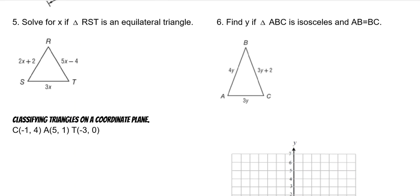Solve for x if triangle RST is an equilateral triangle. So if it's equilateral, all the sides are equal to each other. You just choose two to set equal to each other. It doesn't matter which two you choose because they're all the same. I'm going to set these two equal. Subtract 2x from both sides, and x is 7.